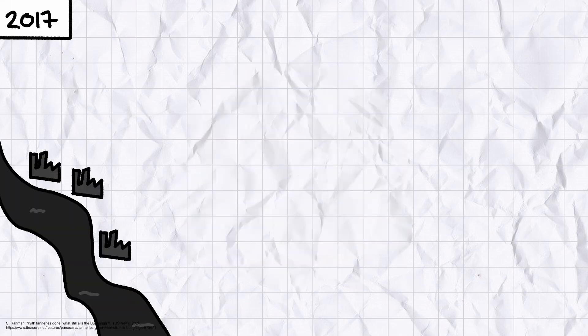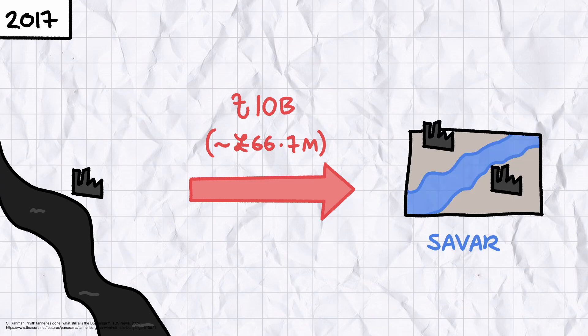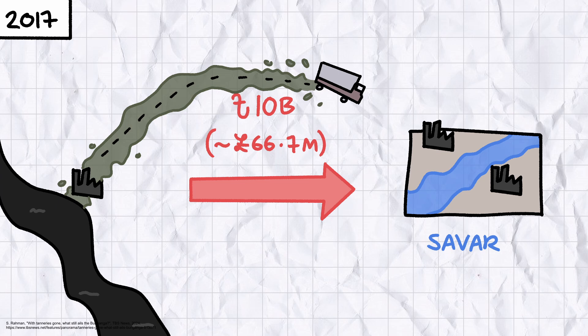In 2017, the government spent at least 10 billion taka to move all tanneries from the banks of the Buriganga to a new industrial estate in Savar, but while some progress has been made in preventing further pollution of the river, many tanneries are still dependent on processing companies located by the Buriganga, and law enforcement has been slow to crack down on small businesses illegally dumping waste products into the waters.